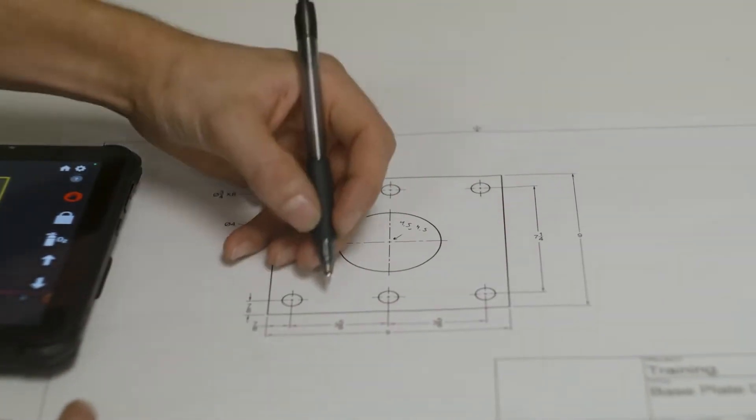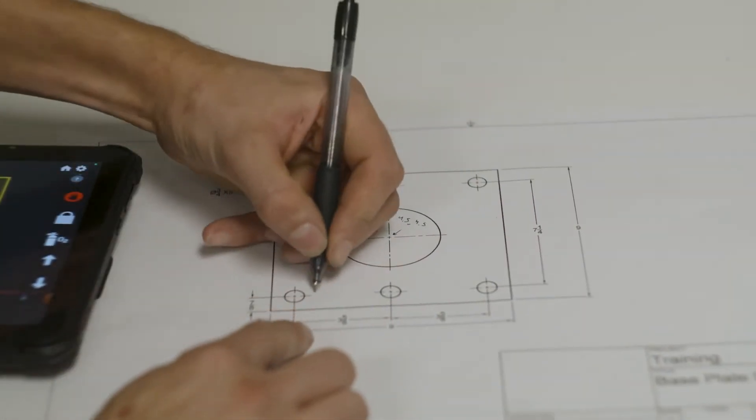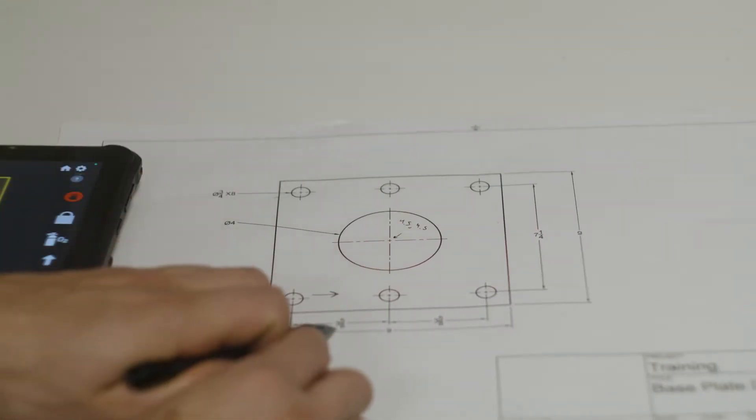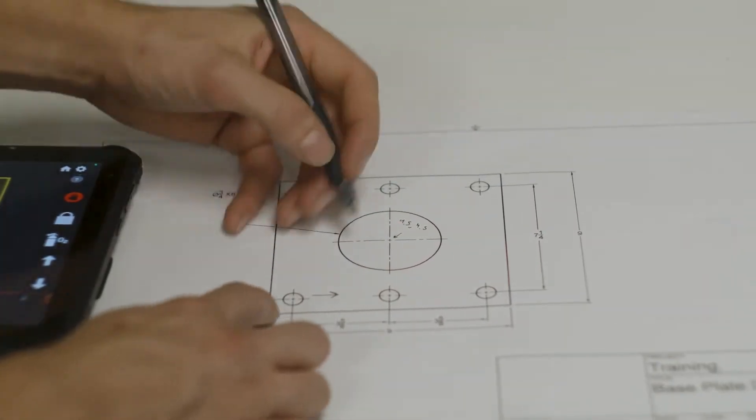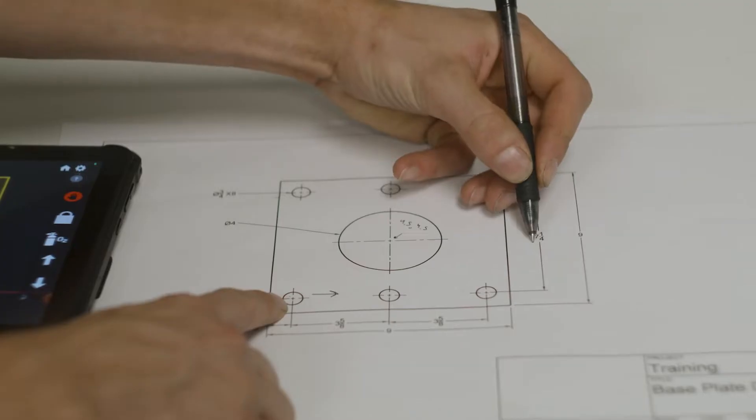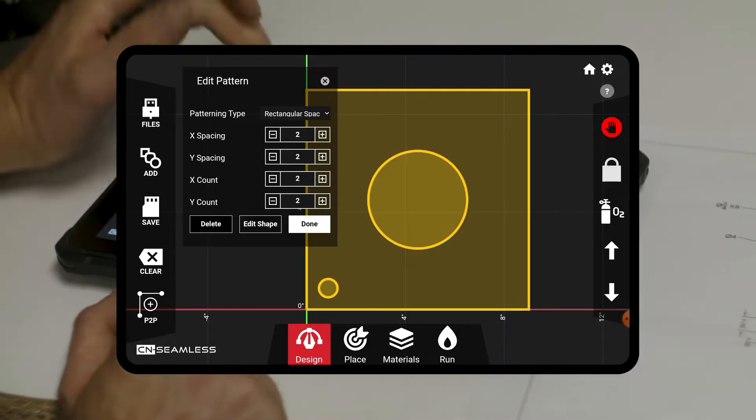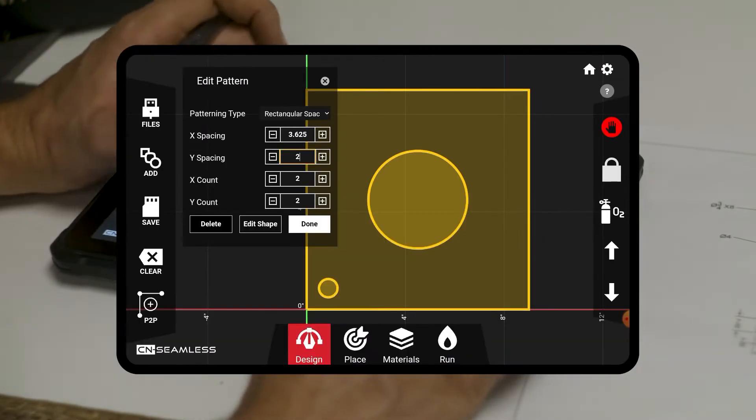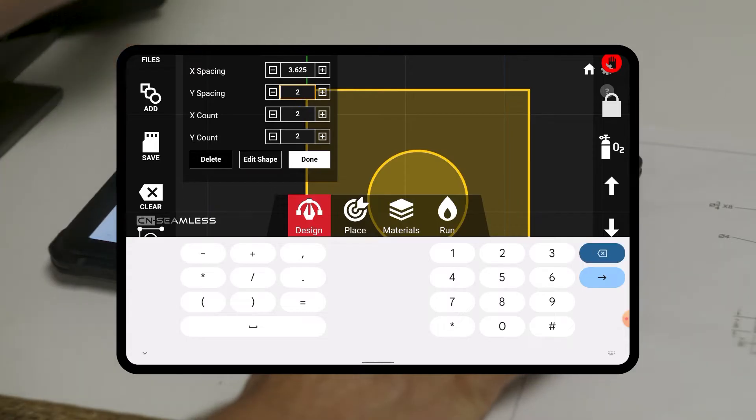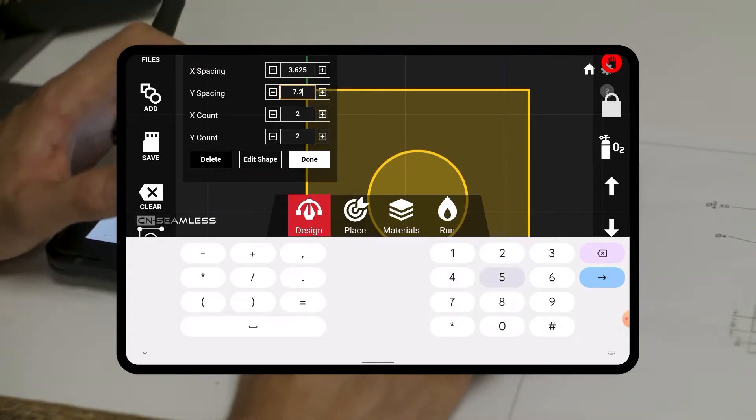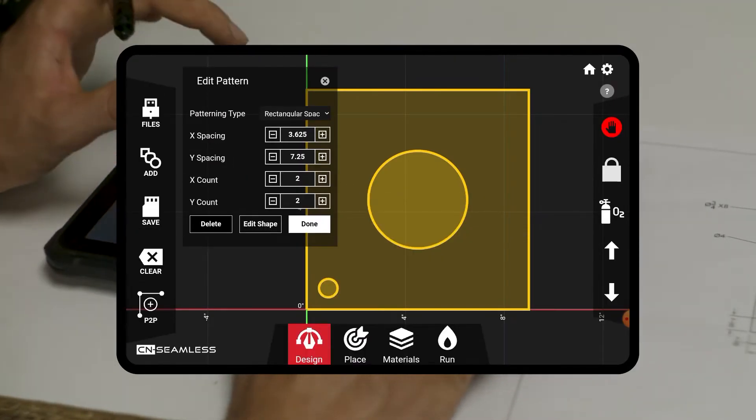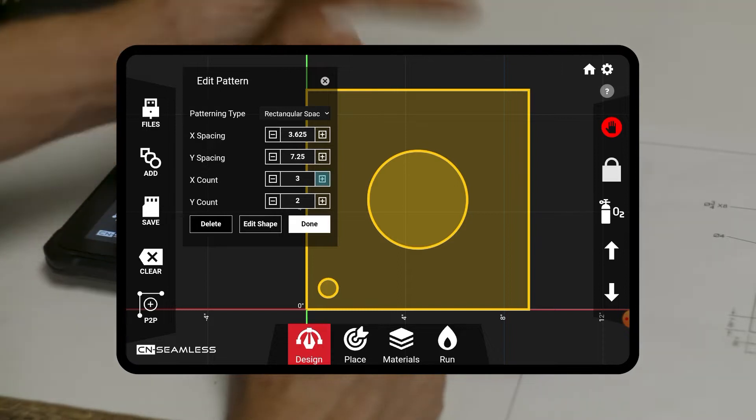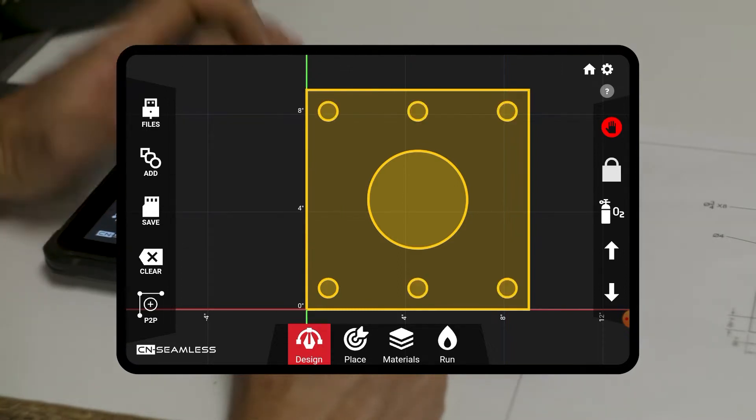If we go back to the drawing, you can see that the spacing on these going this way, these circles is three and five eighths. And then the spacing between this one at the top is seven and a quarter. So if we go back to here, we are going to have the spacing in the X be 3.625, that's five eighths. And then the spacing up is going to be seven point two five. We're going to have three circles along this way and two this way. So when I click done here, there we go. That created that whole pattern that we want.